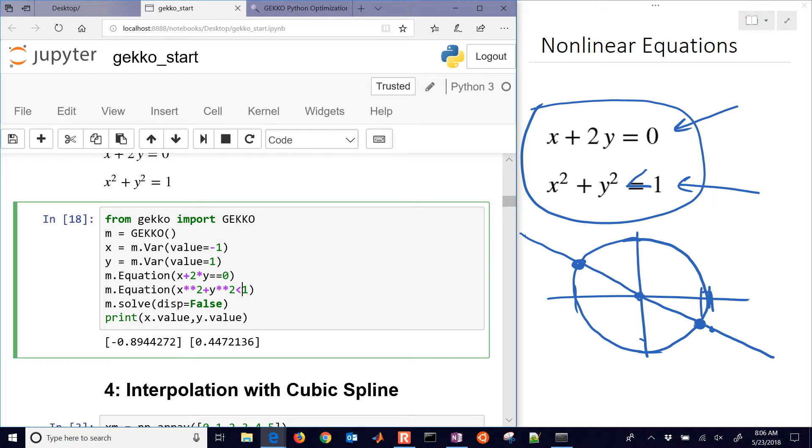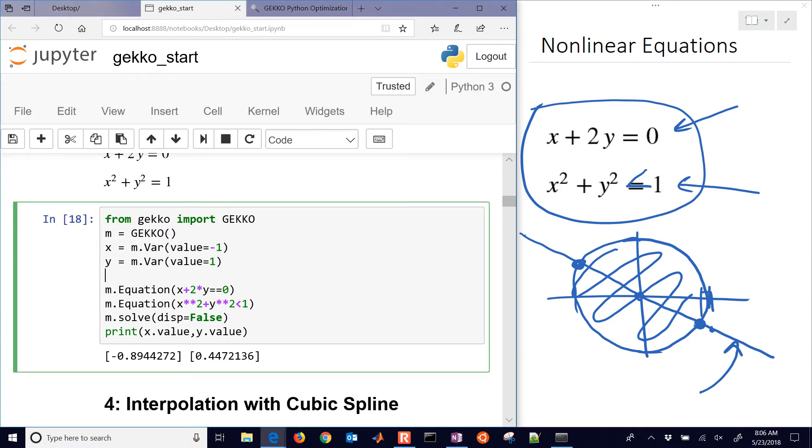Okay, now I have a solution that's going to be anywhere inside this circle that also lies on that line. So I need often an objective function to help guide my selection.